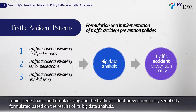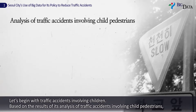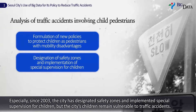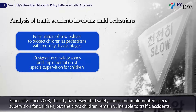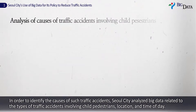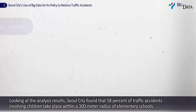Let's begin with traffic accidents involving children. Based on the results of its analysis of traffic accidents involving child pedestrians, Seoul City has implemented diverse policies to protect children, as it does pedestrians with mobility disadvantages. Especially since 2003, the city has designated safety zones and implemented special supervision for children, but the city's children remain vulnerable to traffic accidents. In order to identify the causes of such accidents, Seoul City analyzed big data related to the types of traffic accidents involving child pedestrians, location, and time of day.